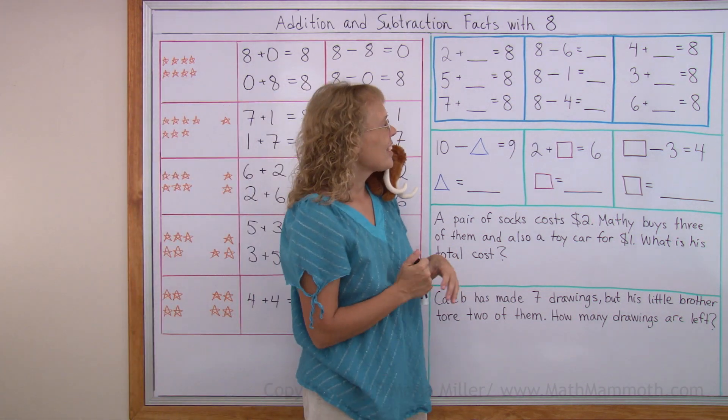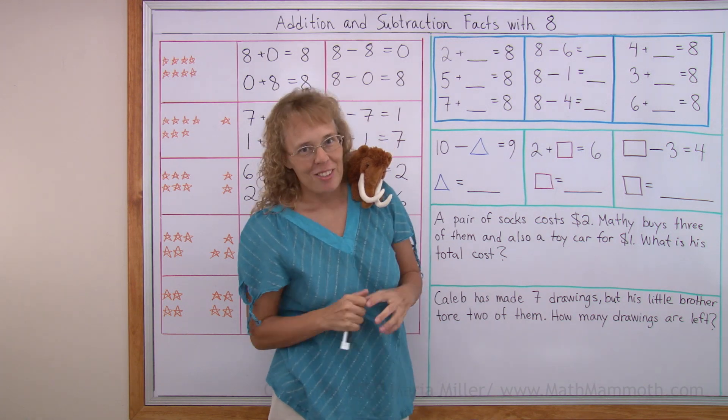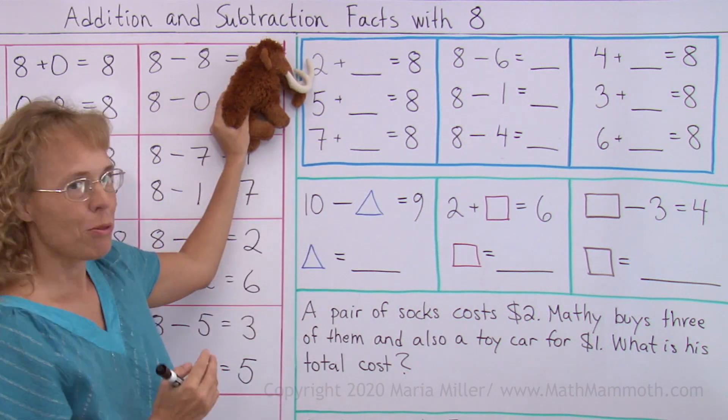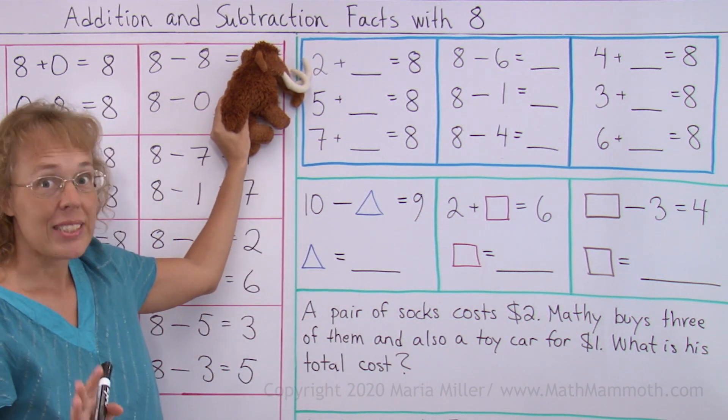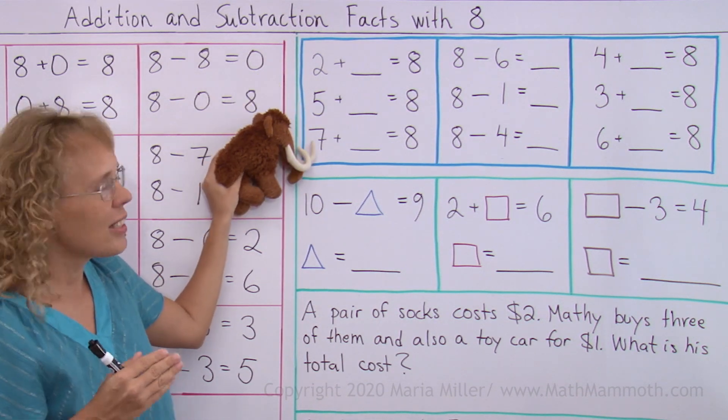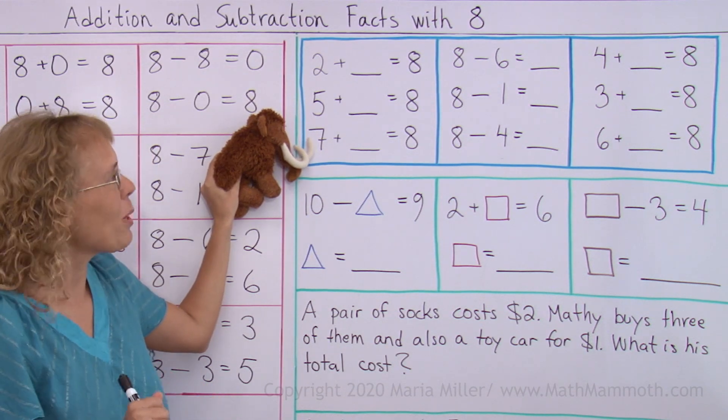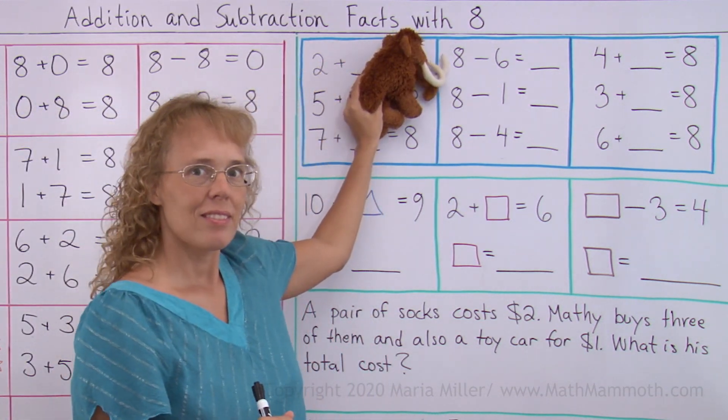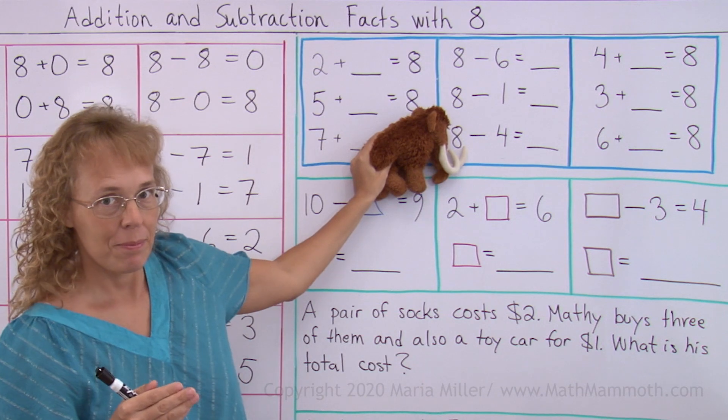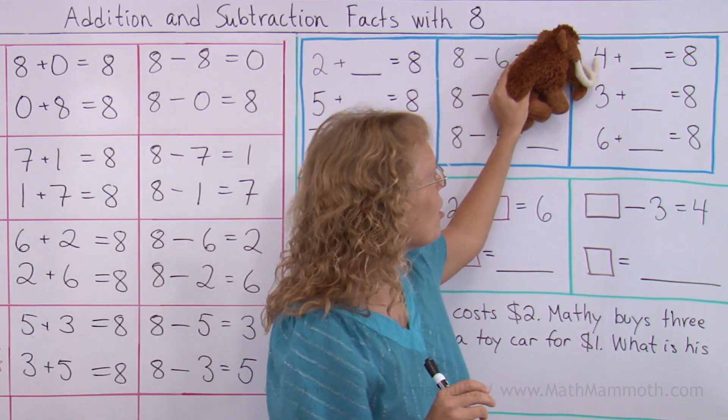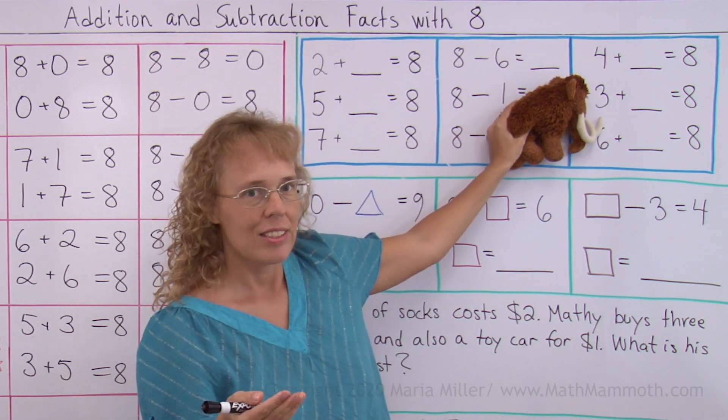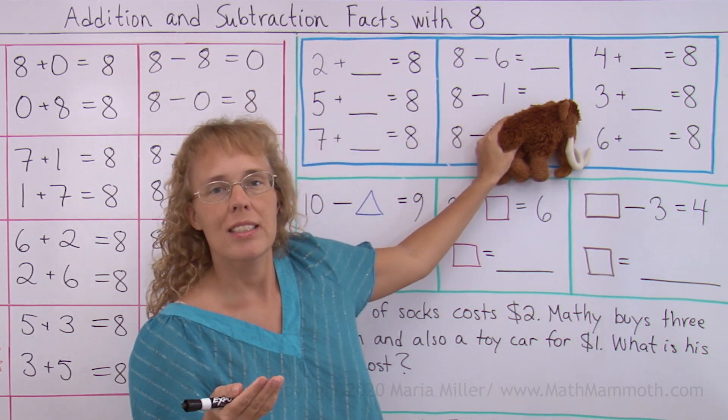Like before. And this time, I'm gonna again let Mathie do the drilling or pointing. Okay, ready Mathie? Sure. 2 plus what number makes 8? 6, yeah. 5 plus what number makes 8? 3. And then 7 and how many more makes 8? 1. 8 minus 6? 2. 8 minus 1? 7. 8 minus 4? 4. 4 plus how many makes 8? 4. And 3 plus how many makes 8? 5. And 6 plus how many makes 8? 2.